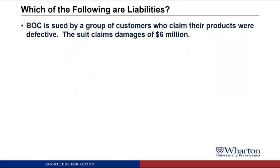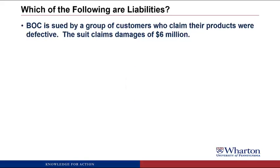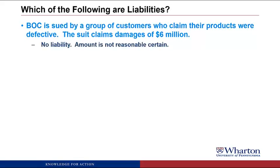BOC is sued by a group of customers who claim their products were defective. The suit claims damages of $6 million. This would not be a liability. Even though the obligation is created by the benefit we got from selling the products, we can claim that the amount of the payment is still uncertain — it's not reasonably certain. The suit claims damages of $6 million, but who knows how much we'll actually have to pay, if anything. So because there's uncertainty, we don't have to record a liability in this case.